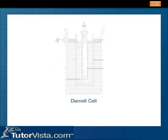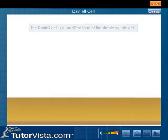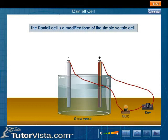The Daniel Cell is a modified form of the simple voltaic cell. Both the defects of the simple voltaic cell, namely local action and polarization, are removed in this cell.